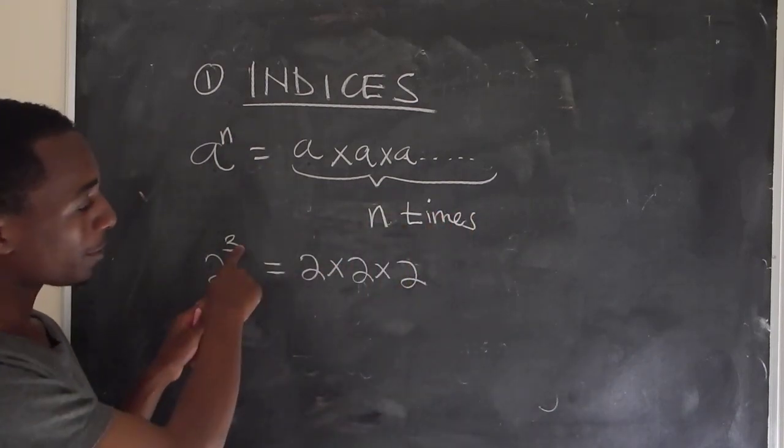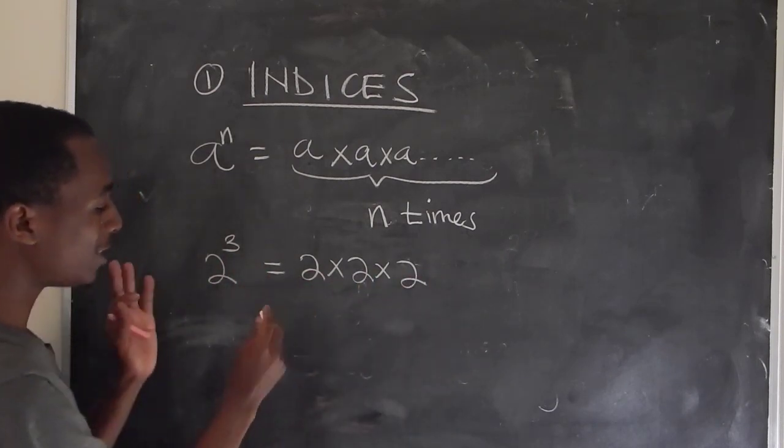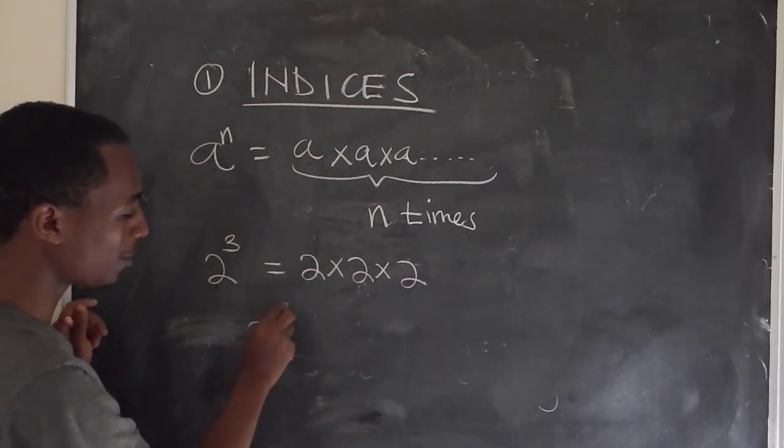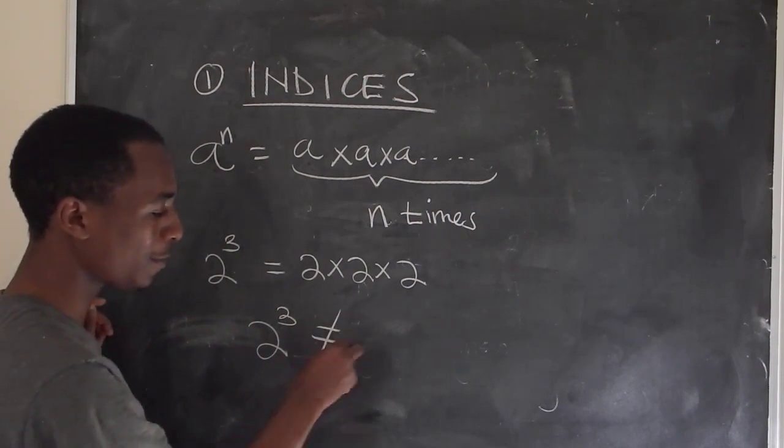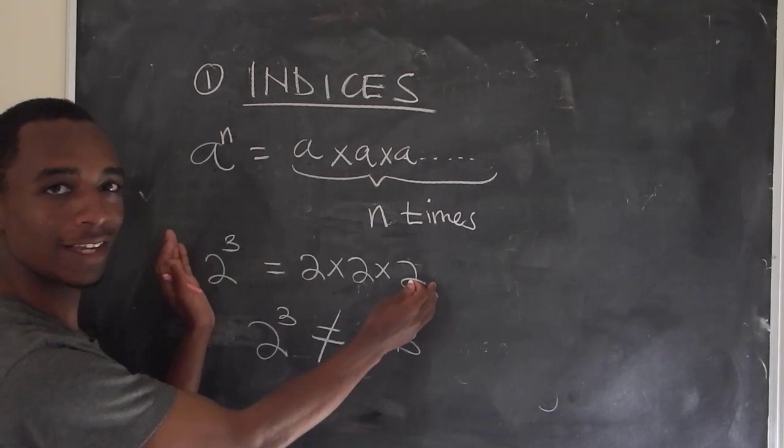For example, 2 to the power 3 means 2 multiplied by itself 3 times, and not this. So if you have 2 to the power 3, this is not the same as 2 times 3. This is wrong. This is the correct thing here.